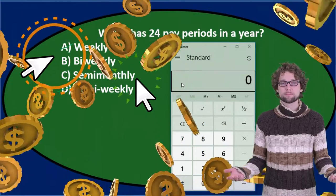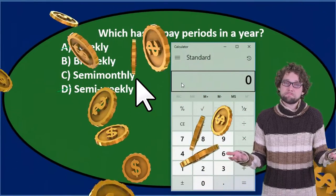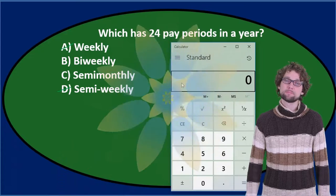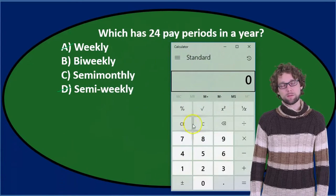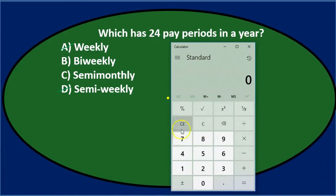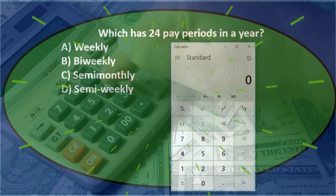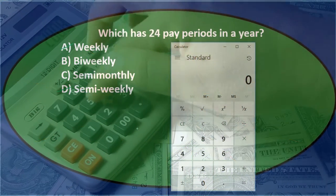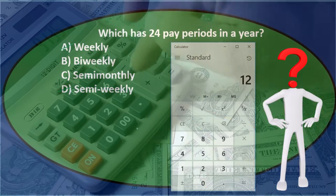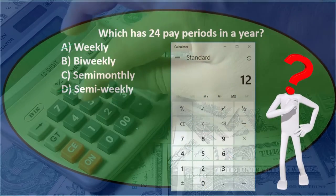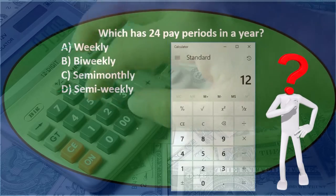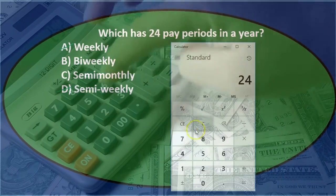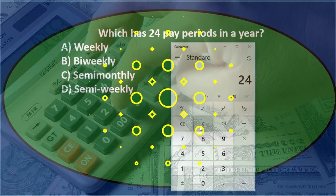Once again, question one: which has 24 pay periods in a year — is it B) bi-weekly or C) semi-monthly? The way to think about it: if we say semi-monthly, there are 12 months in a year, and if we pay on the 15th and the 30th every month, that's two times a month. So 12 times 2 would be 24.